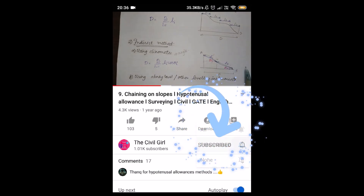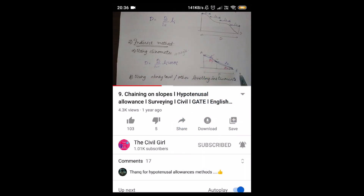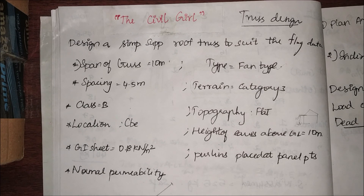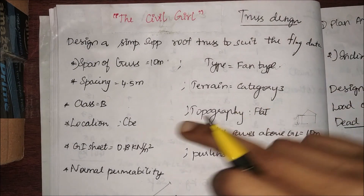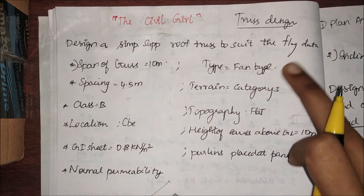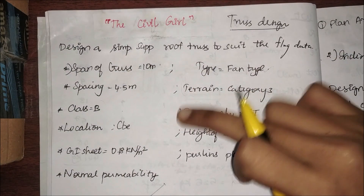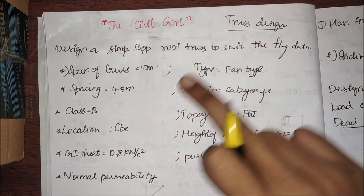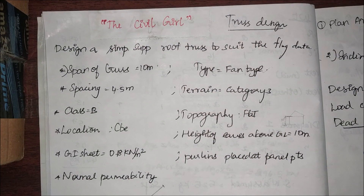For this you will need four codes: IS 800, obviously because this is a steel design, and IS 875 Parts 1, 2, and 3. Coming to the problem: design a simply supported roof truss to suit the following data. Note that we are only designing the roof truss and not the columns.